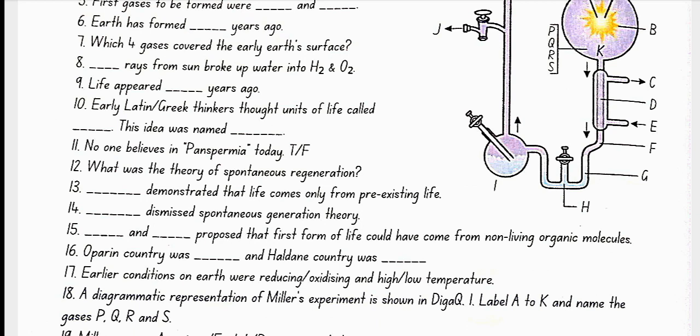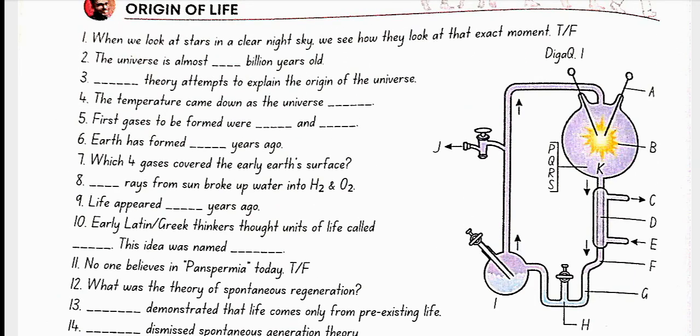A diagrammatic representation of Miller's experiment is shown in diagram 1, label A to K, and name the gases P, Q, R and S. Here A is the electrodes, B is spark discharge, C is water out, D is condenser, E is water in, F is water droplets, G is water containing organic compounds, H is liquid water in trap, I is boiling water, J is to vacuum pump, K is gases. P is CH4 methane, Q is H2 hydrogen, R is NH3 ammonia, S is H2O water.